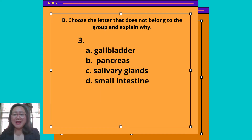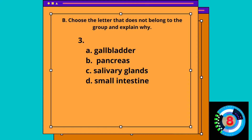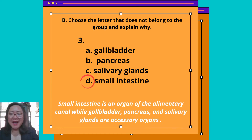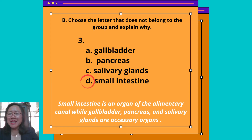Number 3 — Answer: Letter D, Small intestine. The small intestine is an organ of the alimentary canal, while gallbladder, pancreas, and salivary glands are accessory organs.